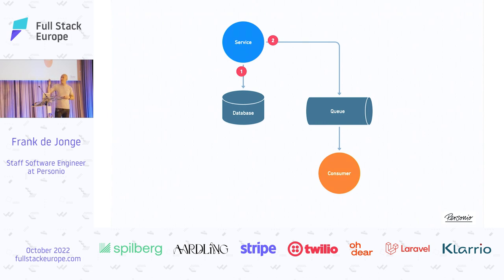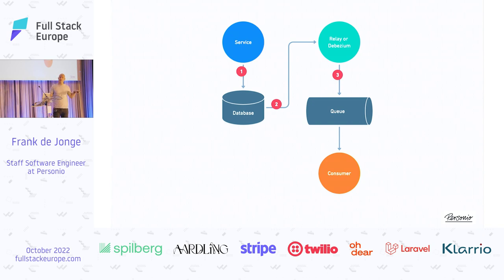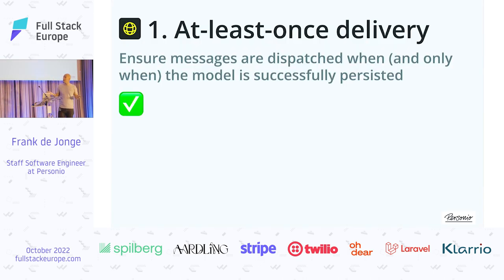Looking at our previous diagram where first we go into the database and then produce to a queue — instead, the service is going to produce the events and store the domain model, and the domain events are going to be sort of relayed, like a network relay, from one point to the next. You can write this yourself — literally just a polling thing on a worker — or use more specialized tooling like Debezium, which looks at the bin log and forwards events from your bin log to the queuing system. It's mostly catered towards Kafka, but you can set up similar things. That makes at-least-once delivery a done deal.